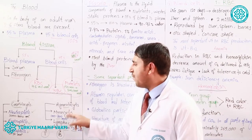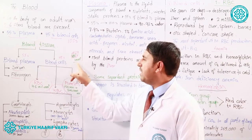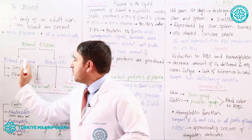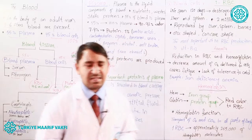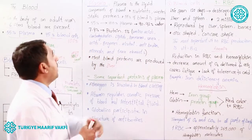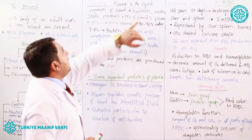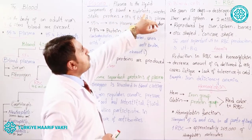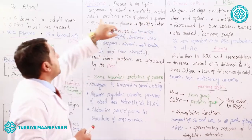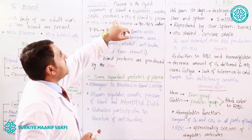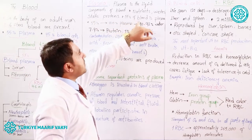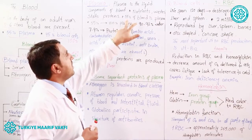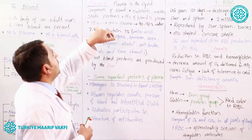Now we are coming to the blood plasma. Plasma is a liquid component of blood. It consists of nutrients, waste products, salts, proteins, and other materials. 55 percent of blood is plasma, as we mentioned.